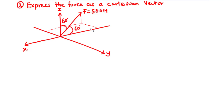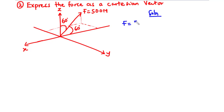From this diagram, we have the magnitude of F to be 500 newtons. We have this angle of 60 degrees, which is the angle formed between F and the x-axis — so that's the angle alpha. We also have the angle gamma, which is formed between F and the z-axis. So we have alpha to be 60 degrees and gamma to be 60 degrees.